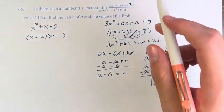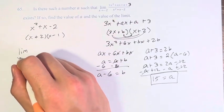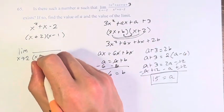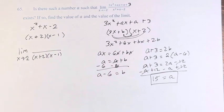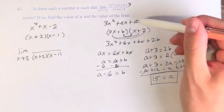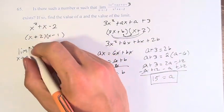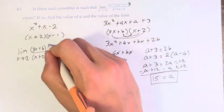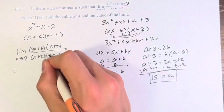So this is the value of a. Now we have to find the value of the limit. So we have the limit as x approaches 2. On the bottom, we have x plus 2 times x minus 1. And I'm actually going to not put in 3x squared plus ax plus a plus 3. We're going to do it in terms of b. So we have 3x plus b times x plus 2.